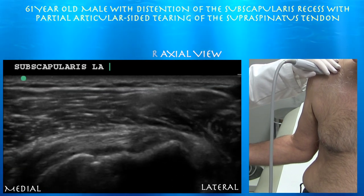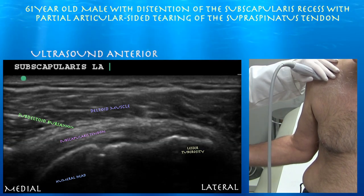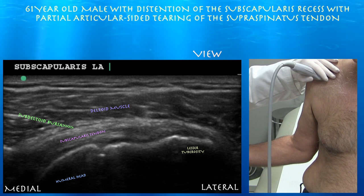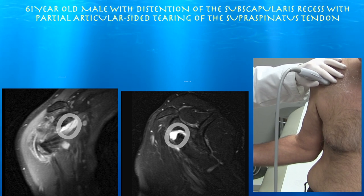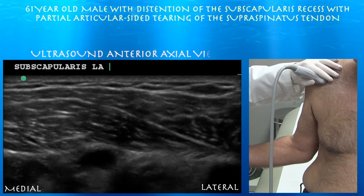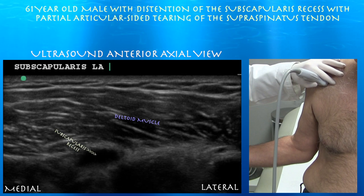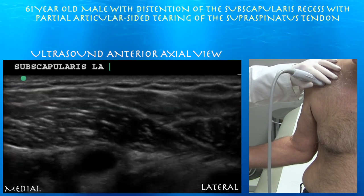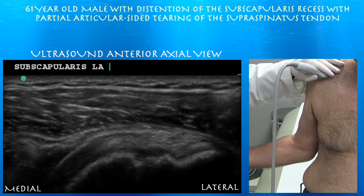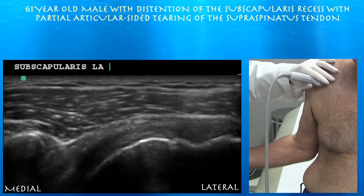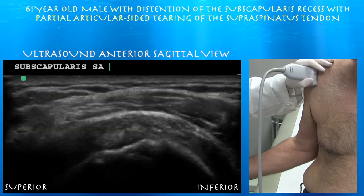The subscap tendon looks fairly okay. Here's a normal subdeltoid bursa which is not distended. The thing I wanted to mention is that he does have an overhanging subscap recess, which you can see here. We're in long axis to the subscapularis tendon and you can see part of this distended subscapularis recess above the subscap tendon, which overhangs — this is really fluid from the joint coming out. You don't want to confuse that with subdeltoid bursitis. Right side of the screen is inferior.